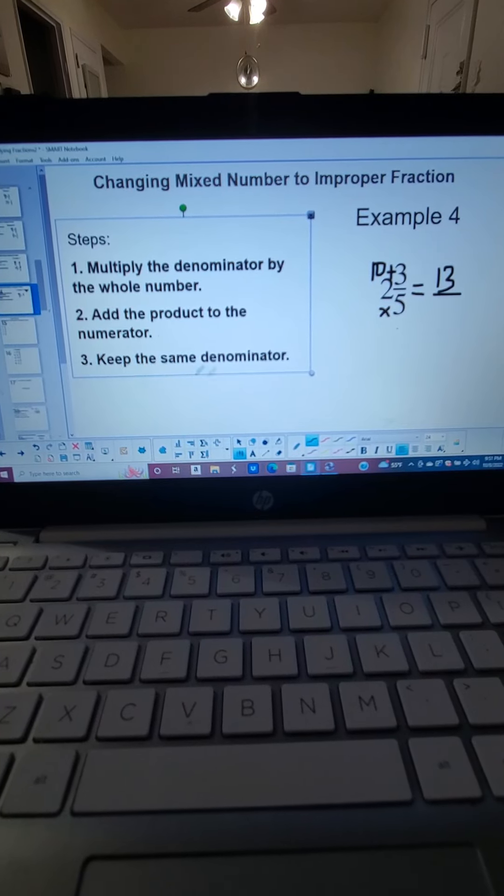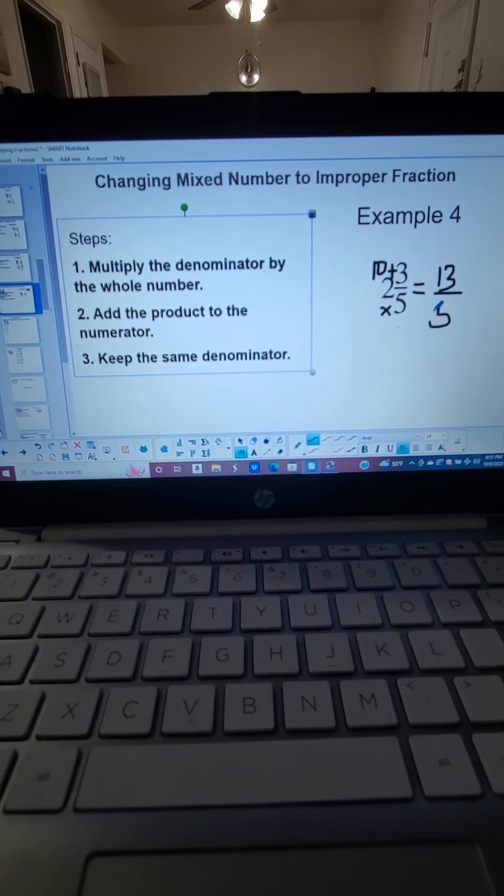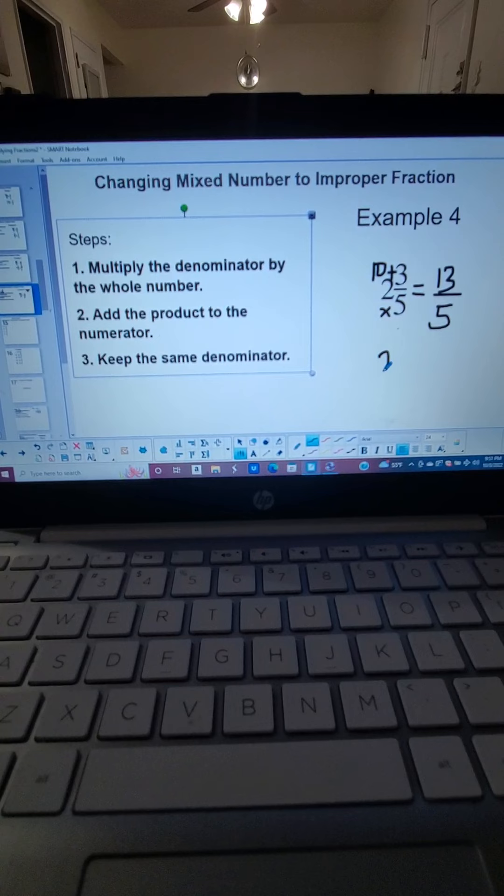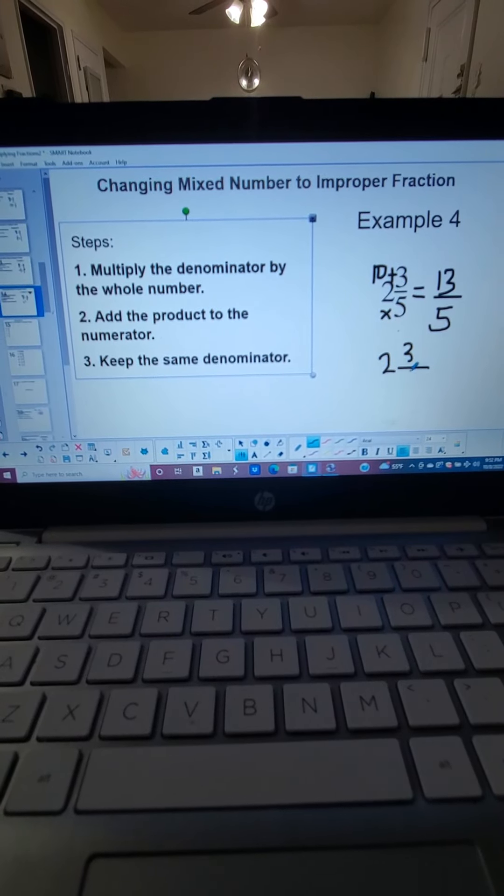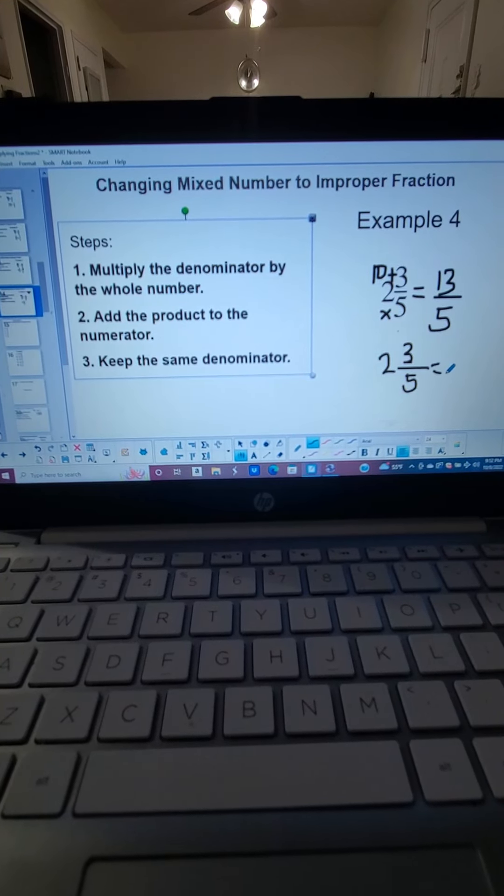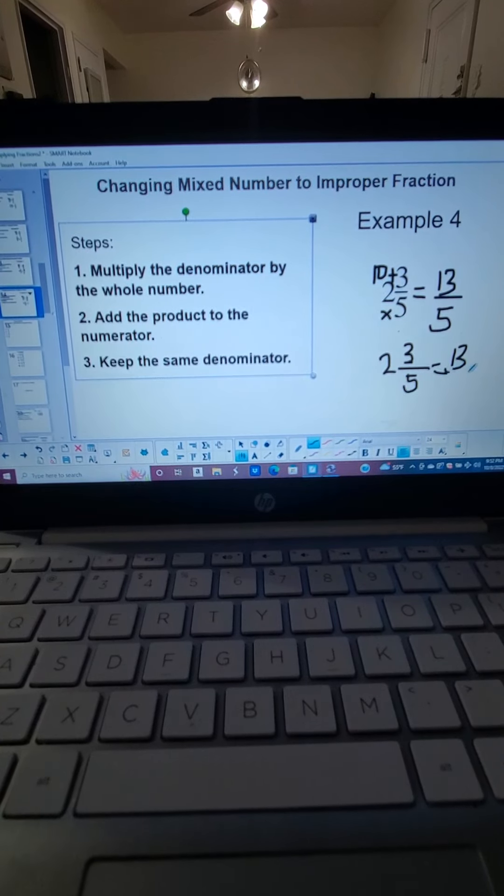And we are going to keep the same denominator. So 2 and 3 fifths is equal to 13 fifths.